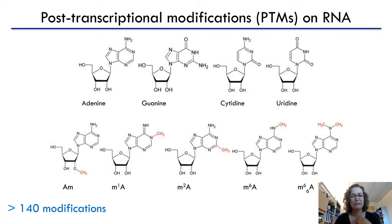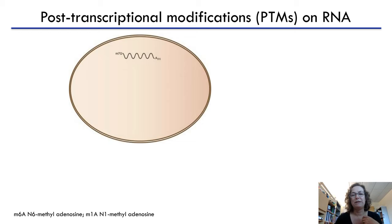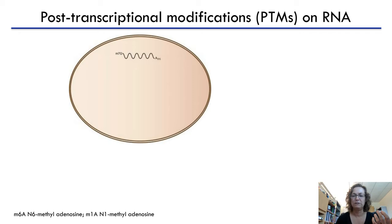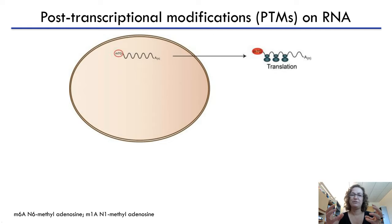Looking at an mRNA, there is a modification known since the 1970s: the 7-methylguanosine cap at the beginning of an mRNA. This cap is really important — if the RNA is not capped, it won't be exported out of the nucleus. The cap is important for stabilizing the RNA and also critically for translation.